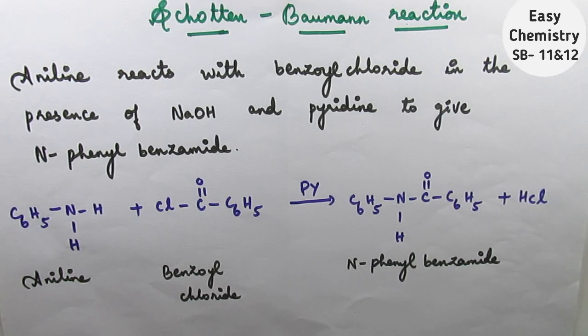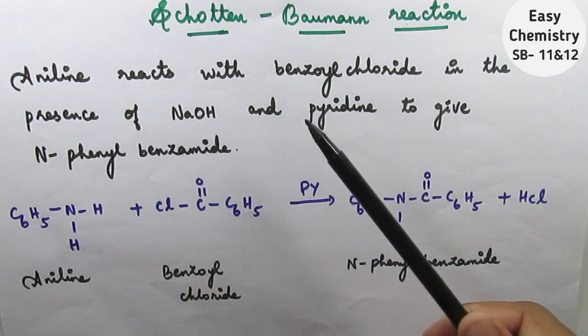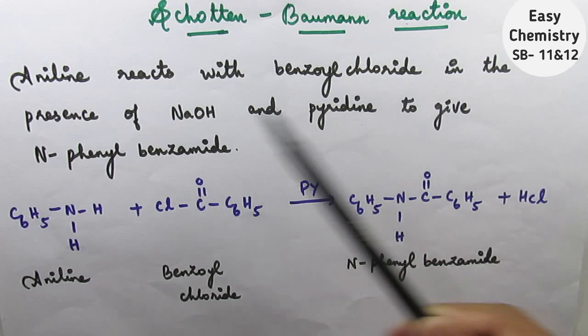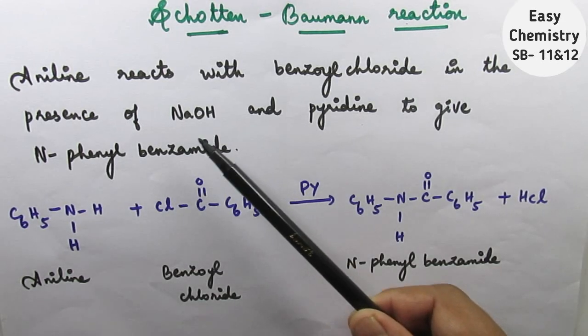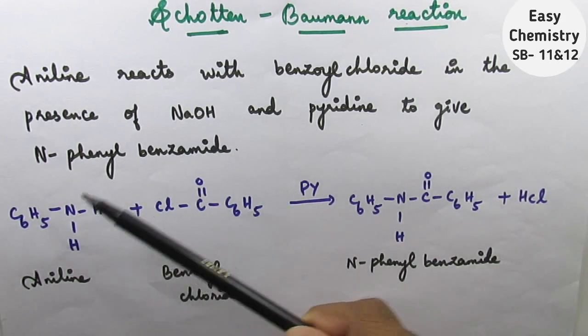Very easy to write, aniline reacts with benzoyl chloride in the presence of NaOH and pyridine to give N-phenylbenzamide.